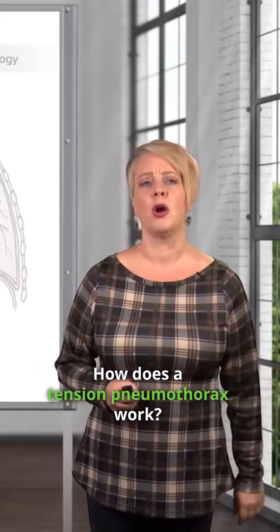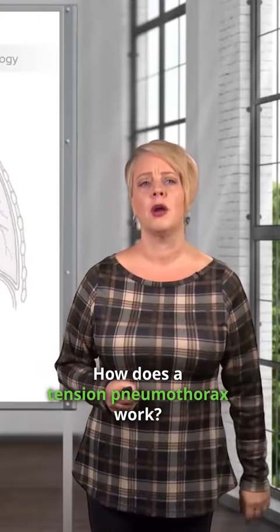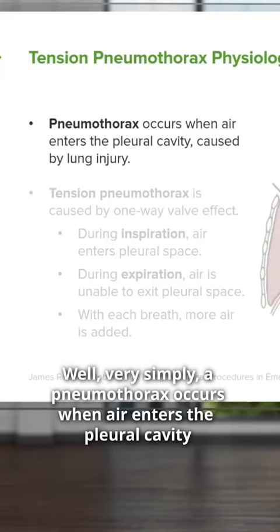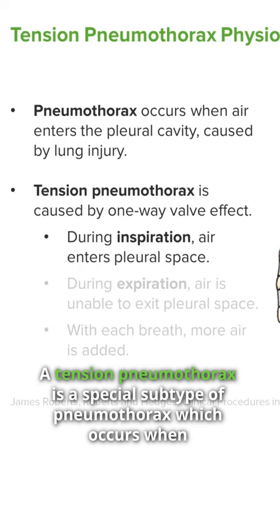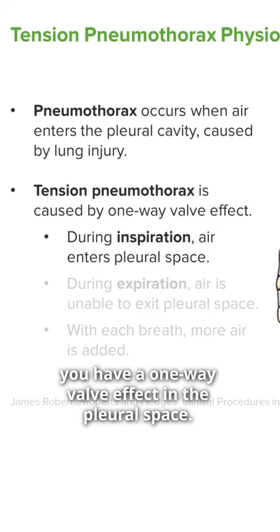How does a tension pneumothorax work? Very simply, a pneumothorax occurs when air enters the pleural cavity. A tension pneumothorax is a special subtype of pneumothorax, which occurs when you have a one-way valve effect in the pleural space.